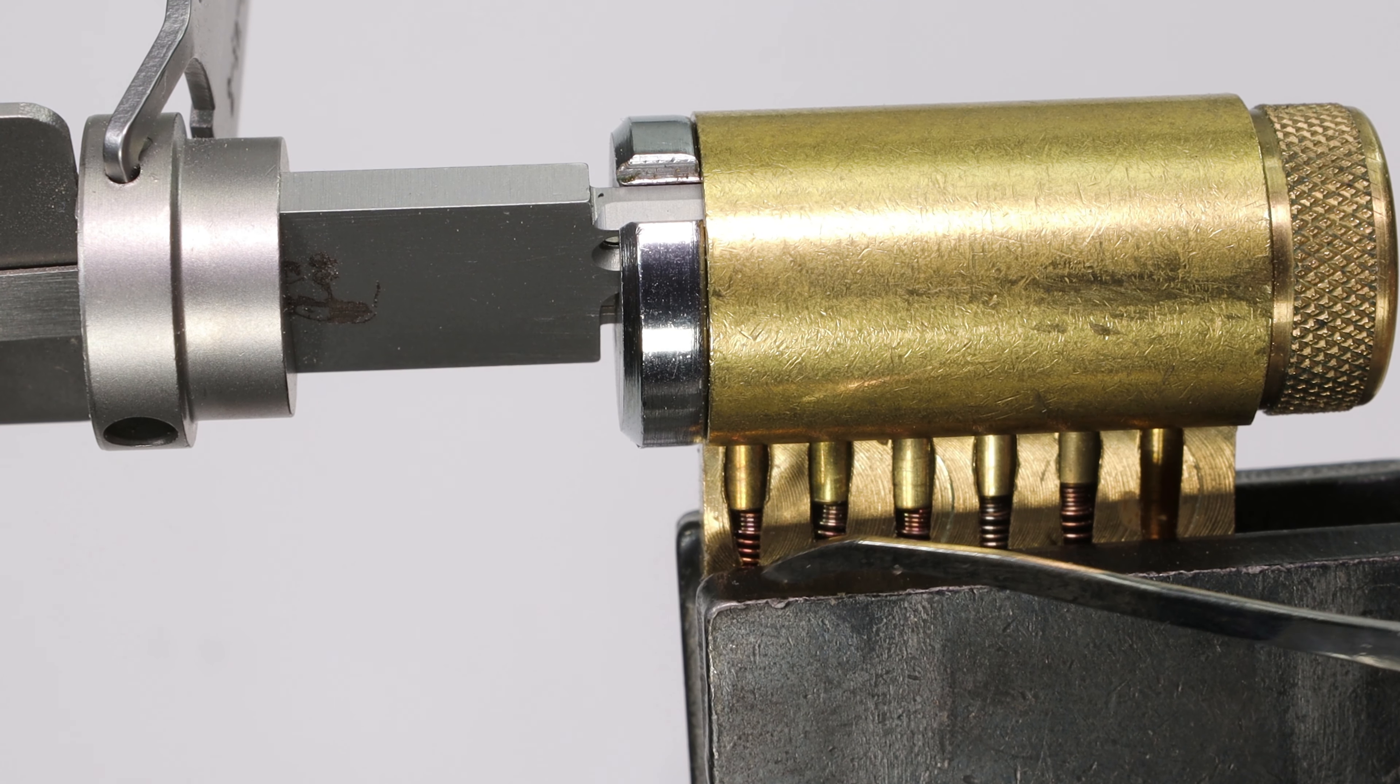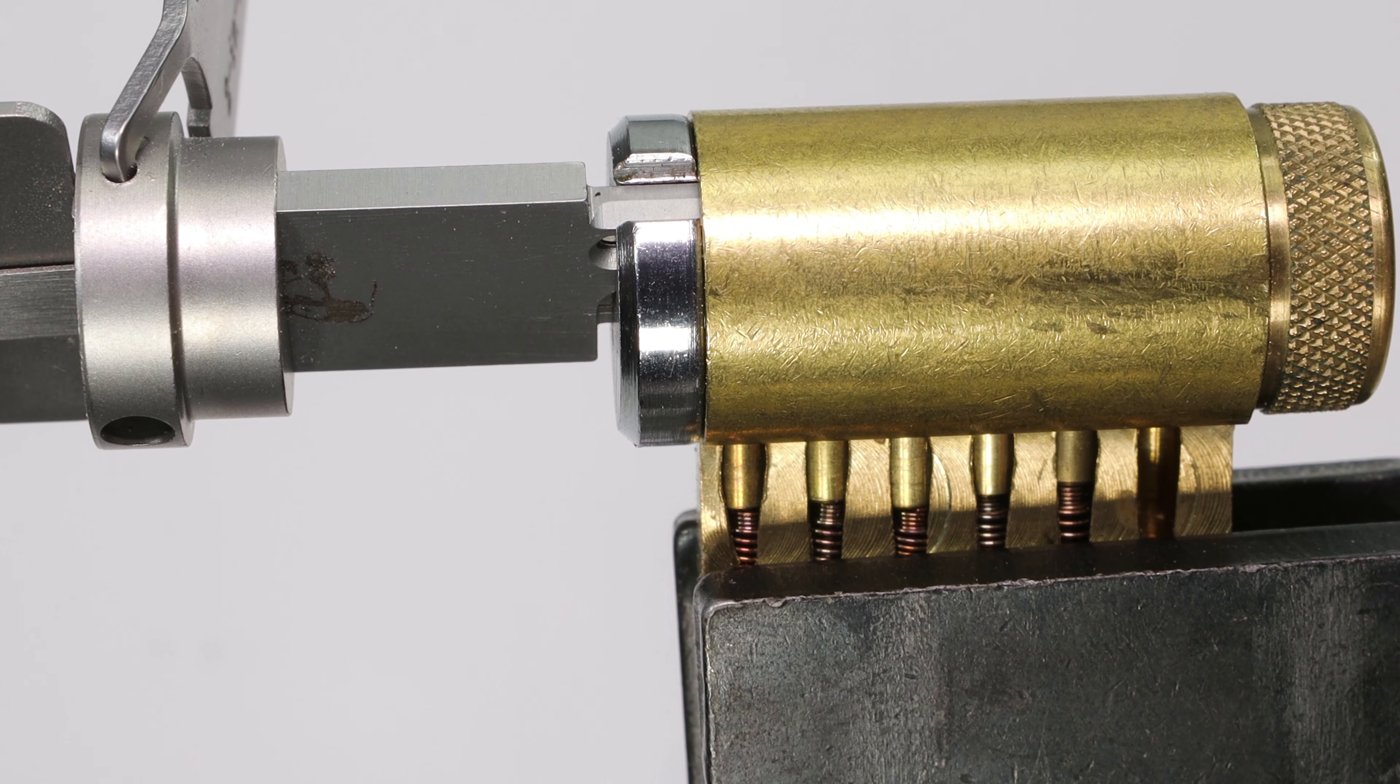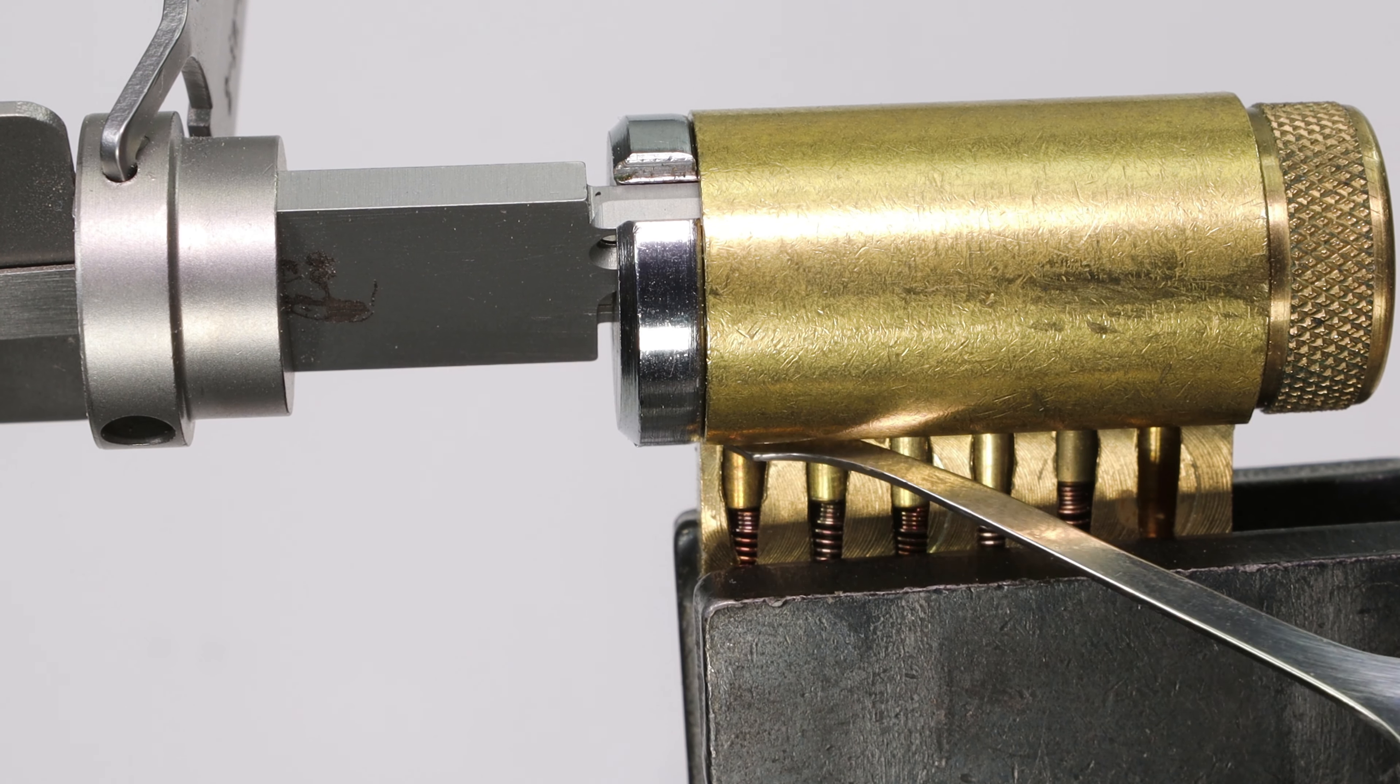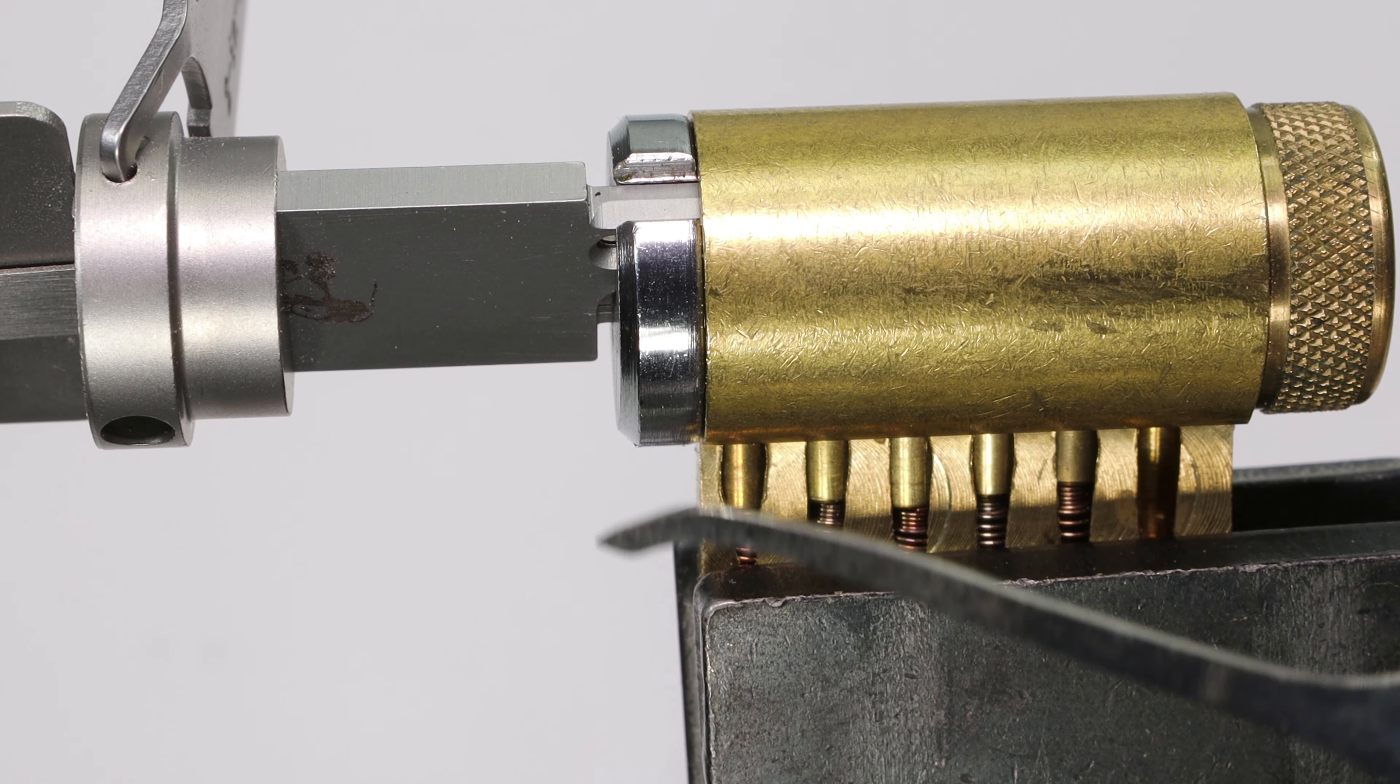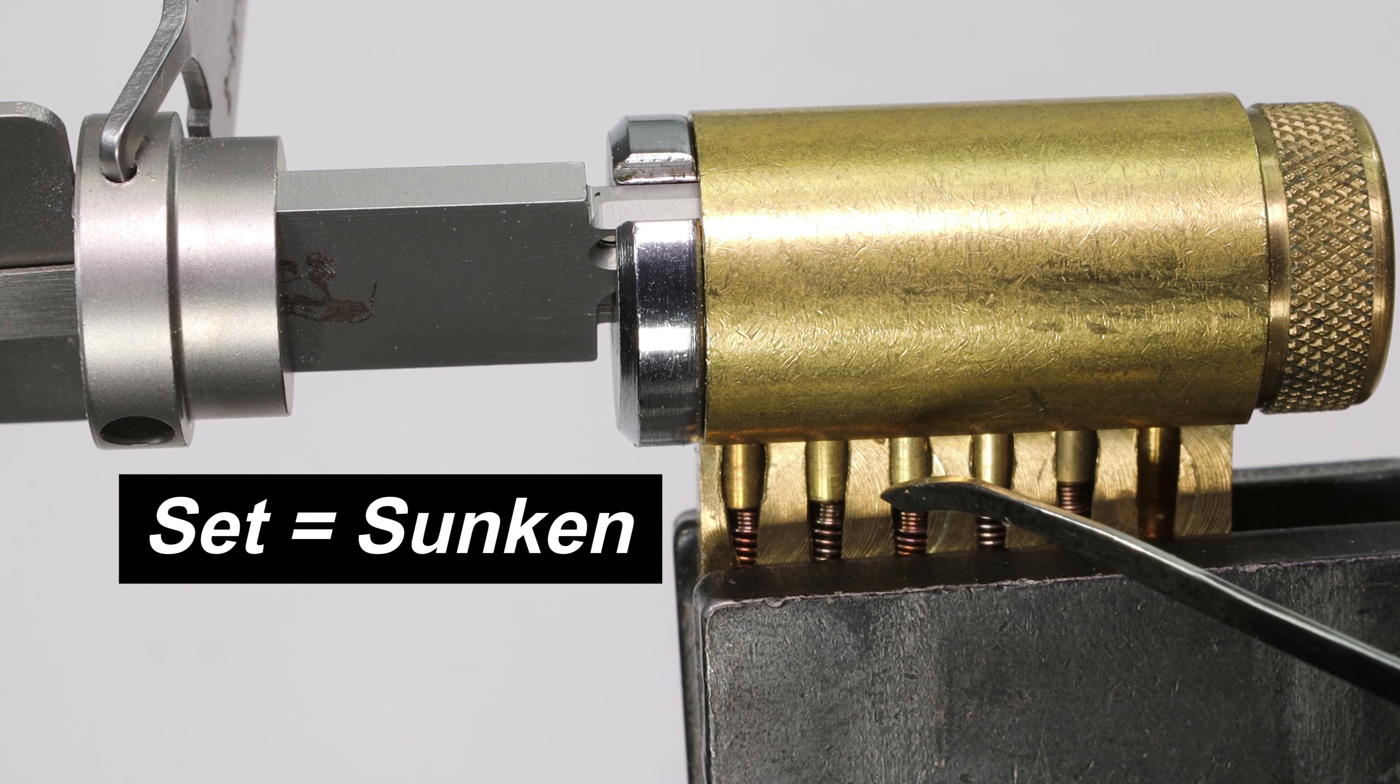So one thing you're going to notice when you go to set a pin when the pins are facing down is that the springs are going to be oriented in the bottom position. So now the spring is pushing the driver pin up, and then that driver pin is pushing up on the key pin. So when you have set that driver pin, the key pin is going to have sunk all the way down to gravity. It's going to be resting right at the very bottom of the plug here, right above where the driver pin is.